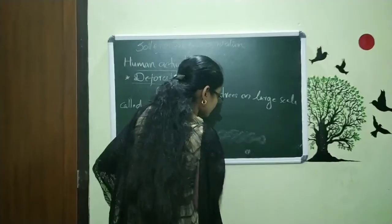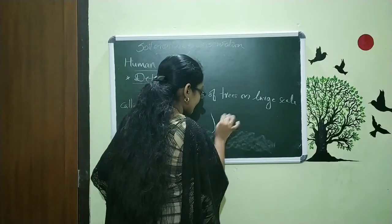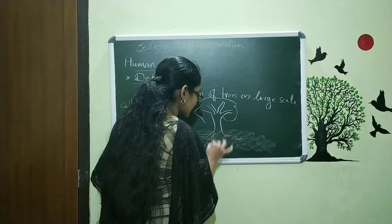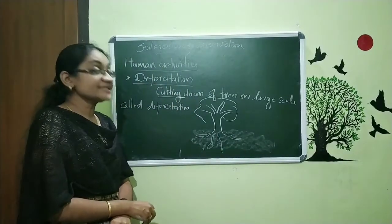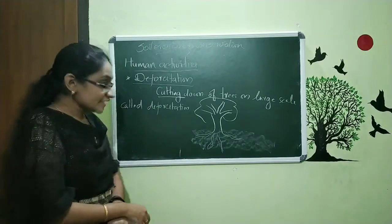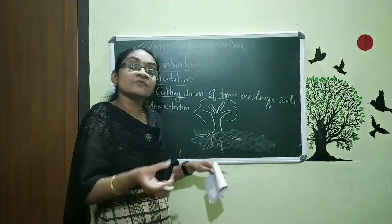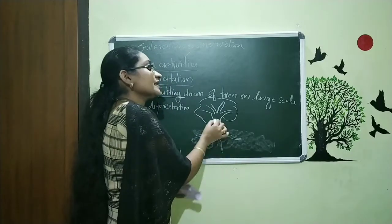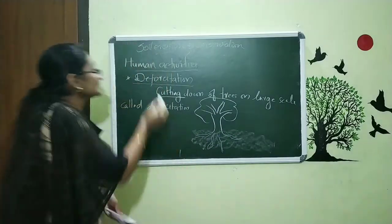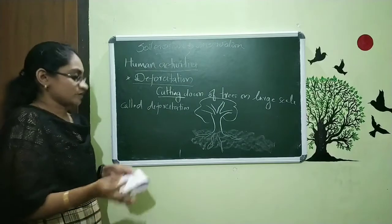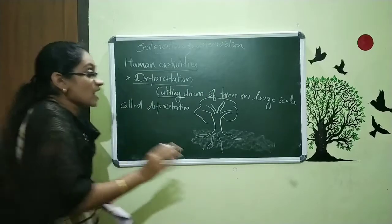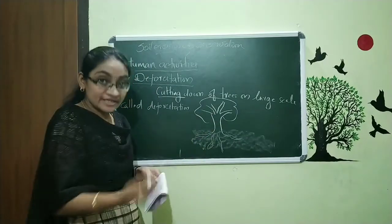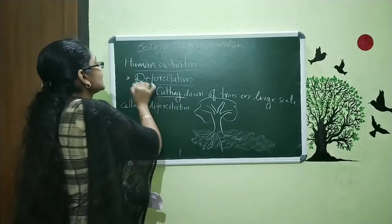It is very simple. On the soil, trees are there, and roots are located in this soil. We already said that these roots hold or bind the soil together. When we cut trees, the roots are also removed or destroyed. So the binding of soil is reduced by cutting trees, and this is how deforestation leads to soil erosion. After the removal of the roots, running water and wind will cause soil erosion.